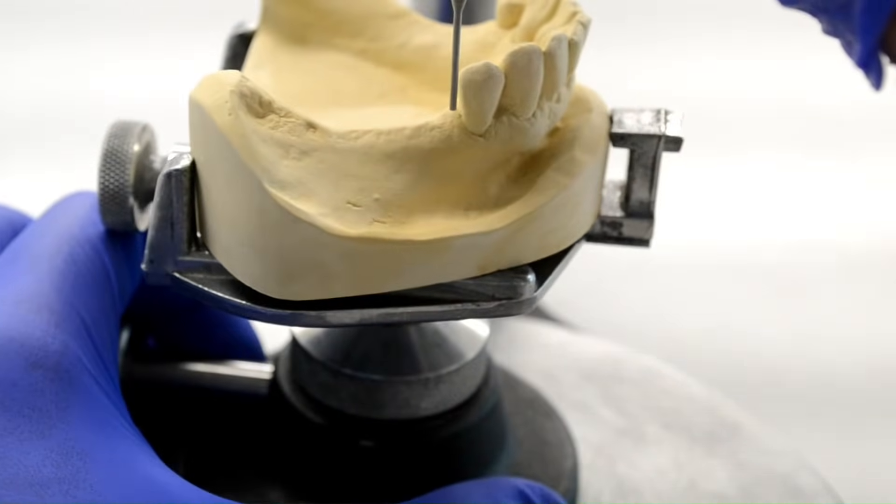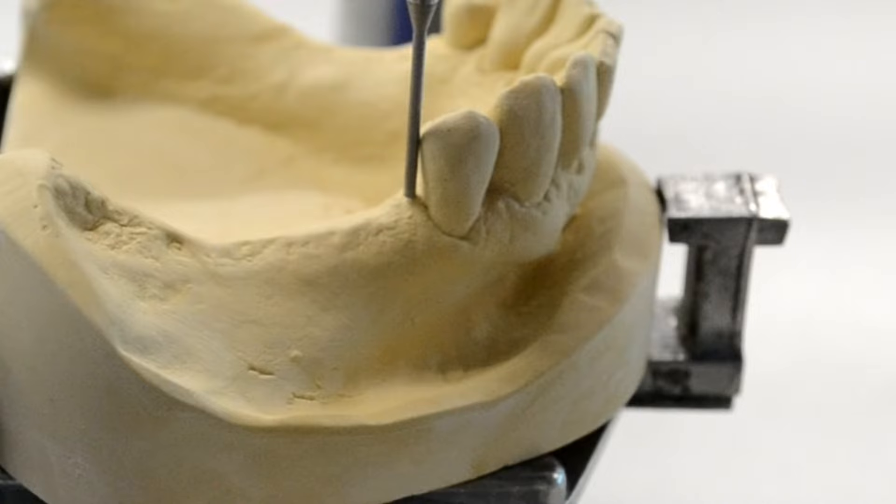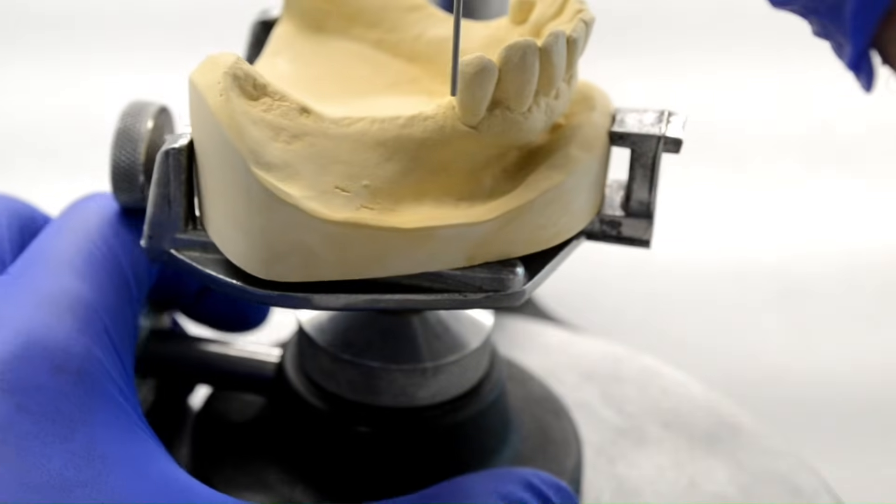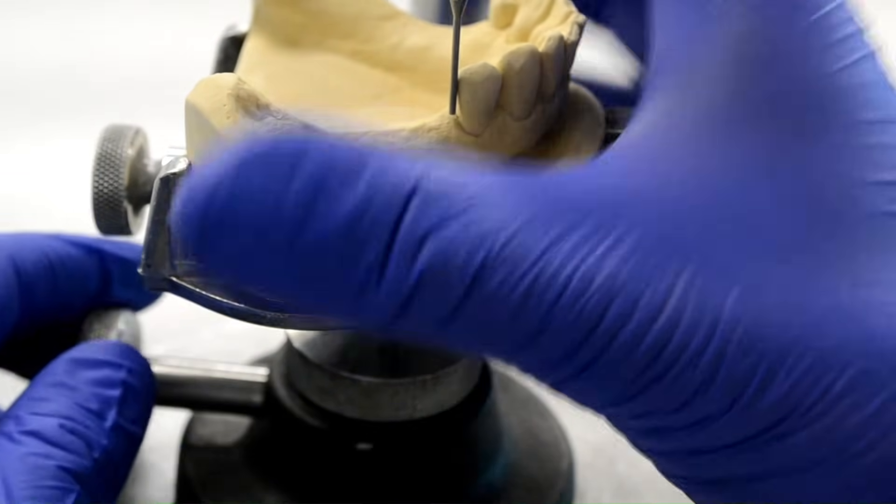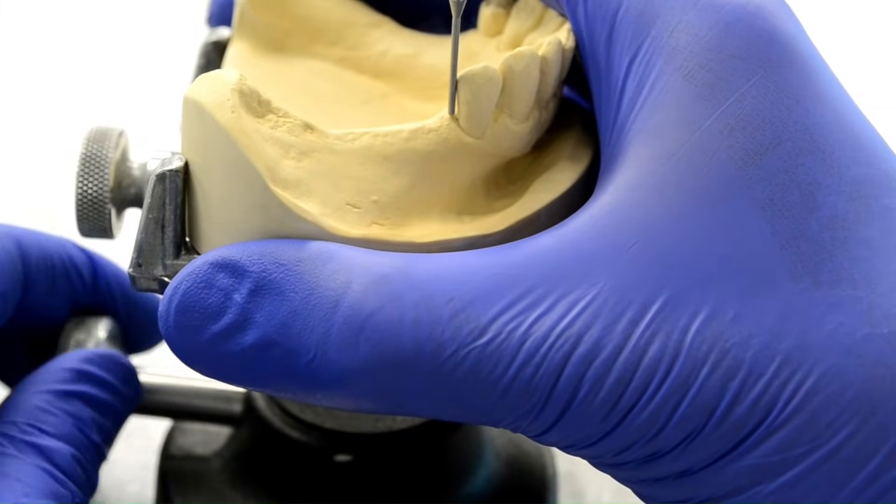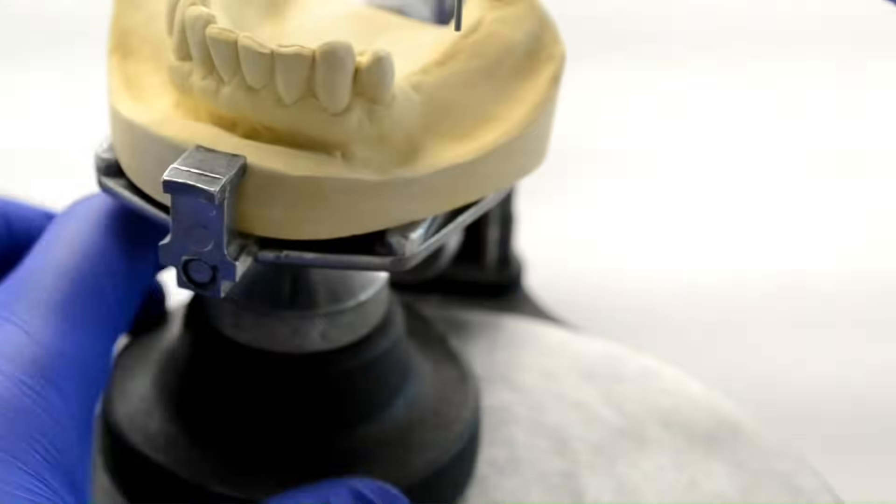As we get the analyzing rod in contact with a surface to be adjusted, a space might appear gingival to the contact point. This means that the angle of the surface to be adjusted does not match the angle chosen for the path of draw, and this would require some adjustment onto that abutment. To minimize this adjustment, we might need to tilt the table in order to change that path of draw so that that surface would better align with the chosen path of draw and minimize the amount of adjustments needed.